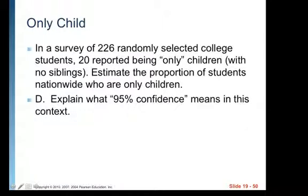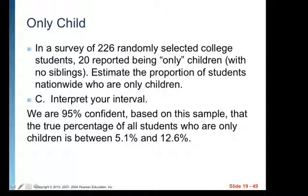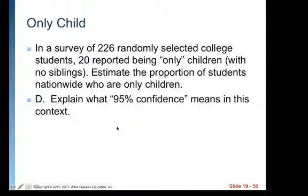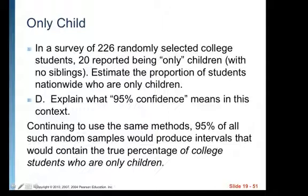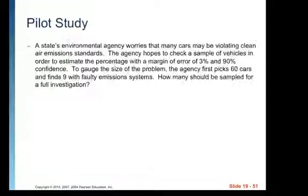The next question is explain what 95 percent confidence means in this context. So here we interpreted our interval, but we make a claim about being 95 percent confident. So somebody asked, well, what does that mean? Continuing to use the same methods, 95 percent of all such random samples would produce intervals that would contain the true percentage of all college students who were only children. So this is saying that if we repeated this process over and over again, we'd make a whole bunch of intervals, just like we saw at the beginning of the lesson. And 95 percent of those intervals would capture the true proportion. Now, we don't know what that true proportion is. But 95 percent of all the intervals that we would create would capture that true proportion.